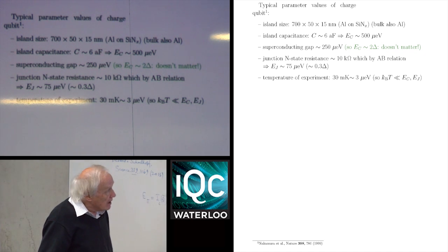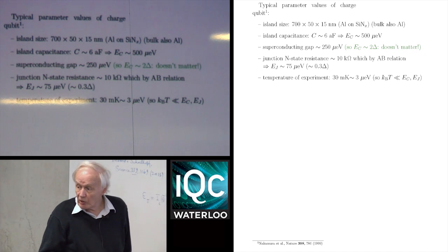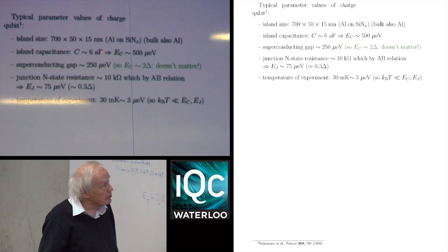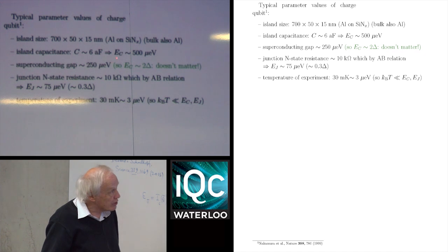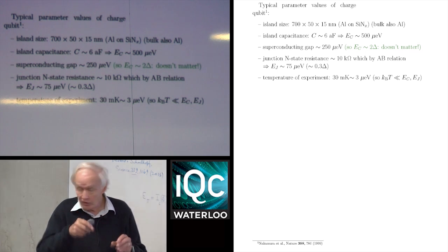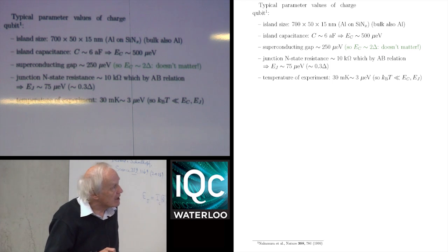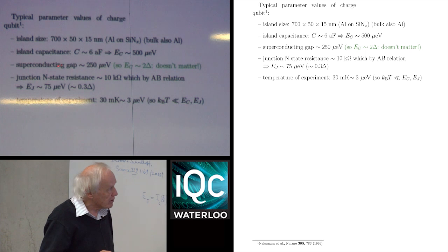The superconducting gap is about 250 microvolts. That's interesting because it's not large compared to E_C, but that doesn't really matter because under operating conditions you're not interested in the full value of E_C — you've tuned your gate voltage so that your two levels are almost in coincidence, and you only get a small part of this quantity. You still treat the superconducting gap as large compared to anything you're actually interested in.